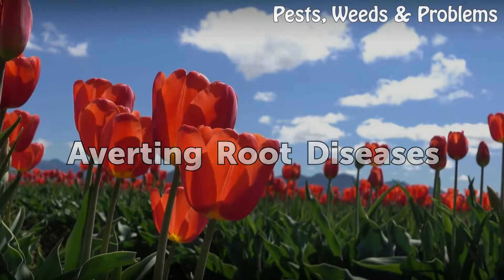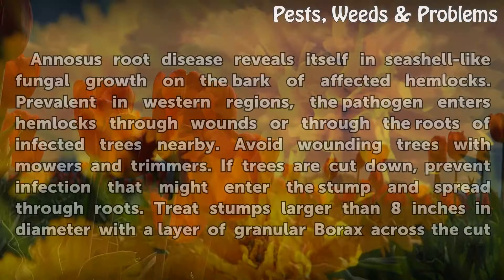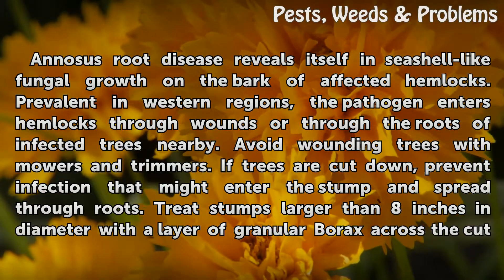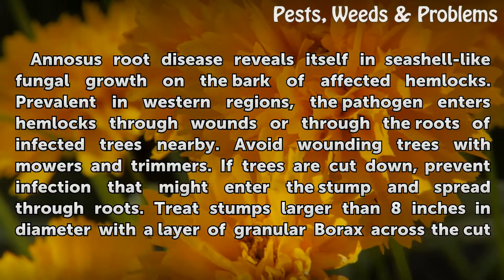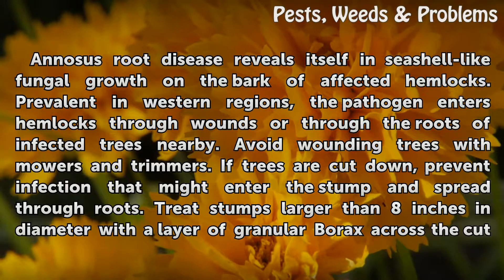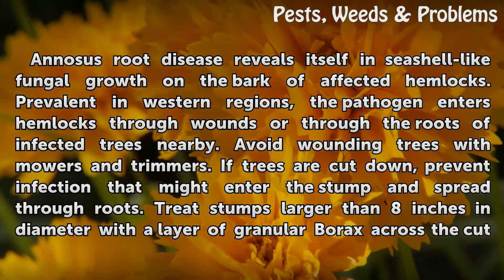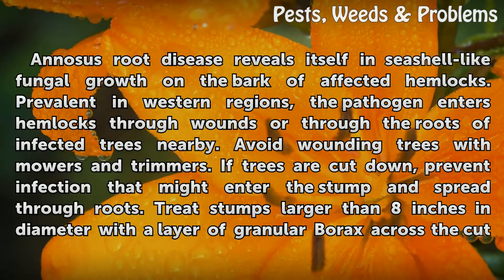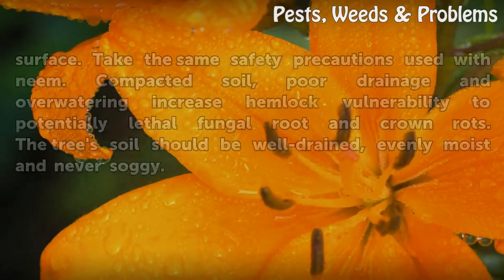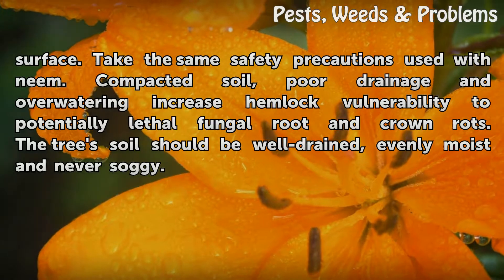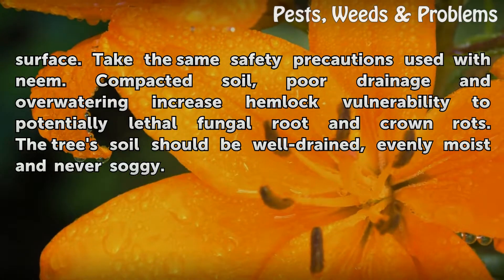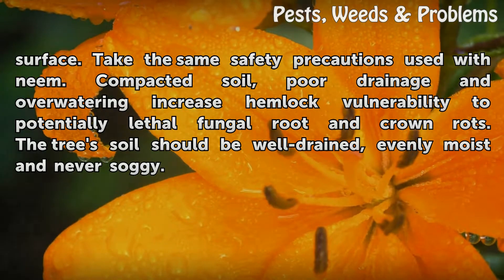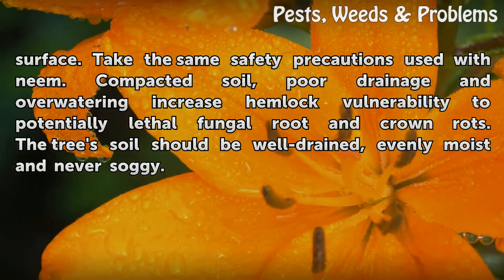Anosis root disease reveals itself in seashell-like fungal growth on the bark of affected hemlocks. Prevalent in western regions, the pathogen enters hemlocks through wounds or through the roots of infected nearby trees. Avoid wounding trees with mowers and trimmers. If trees are cut down, prevent infection by treating stumps larger than 8 inches in diameter with a layer of granular borax across the cut surface. Compacted soil, poor drainage, and over-watering increase hemlock vulnerability to potentially lethal fungal root and crown rots. The tree's soil should be well drained, evenly moist, and never soggy.